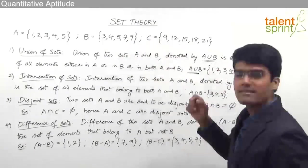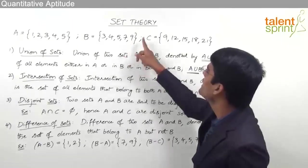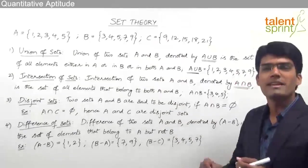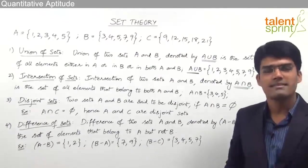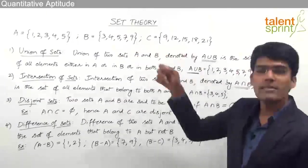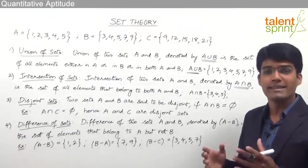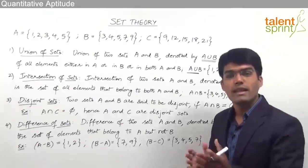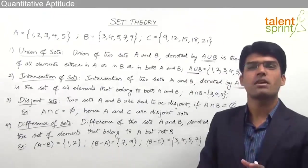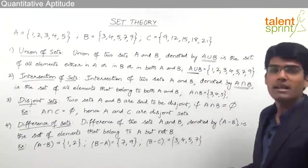For example, B ∩ C equals {9} because 9 is the only element present in both set B and set C. If we take A ∩ C, the elements of A are 1, 2, 3, 4, 5 and those of C are 9, 12, 15, 18, 21 — there is nothing common between A and C. So A ∩ C equals a null set. A null set is a set which has nothing in it — there is no object in a null set.